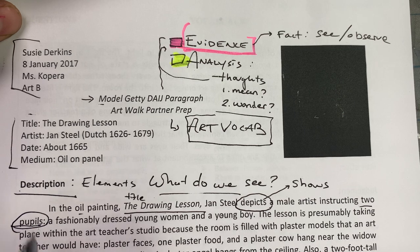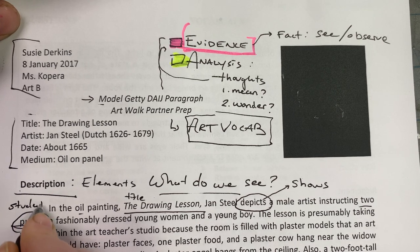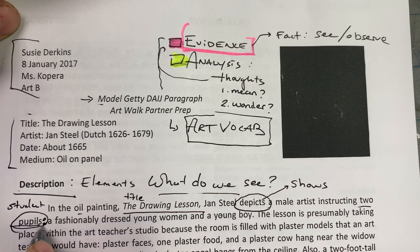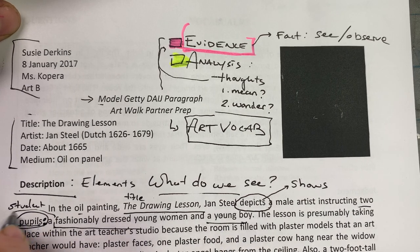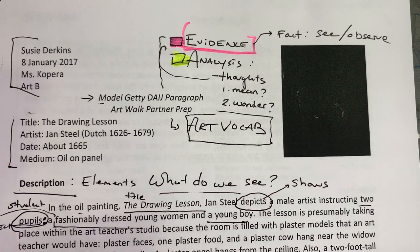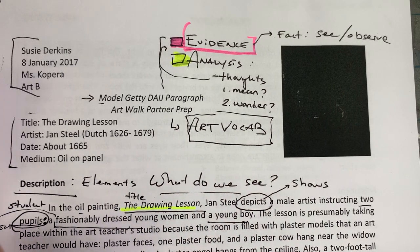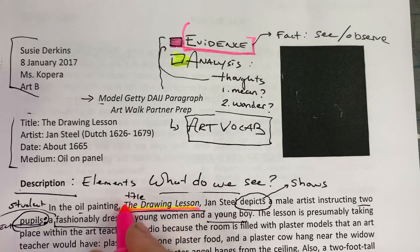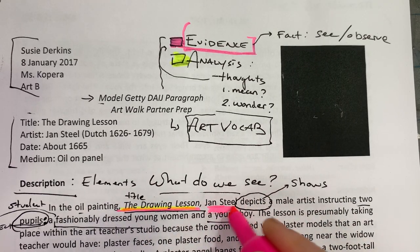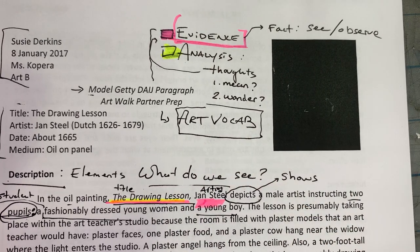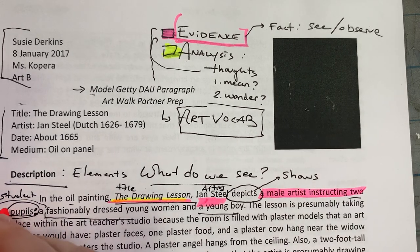The word 'pupils' means student. A fashionably dressed young woman and a young boy. A colon is a great way to introduce a list — these are the two main subjects in the work. We are reading the painting, 'The Drawing Lesson,' and this is a fact. Jan Steele is the artist — that's a fact. Depicts a male artist instructing two pupils.